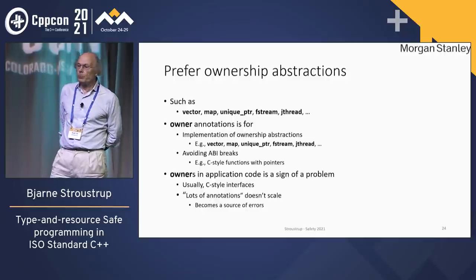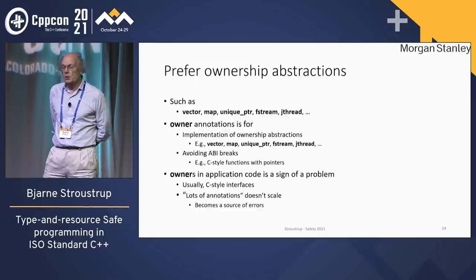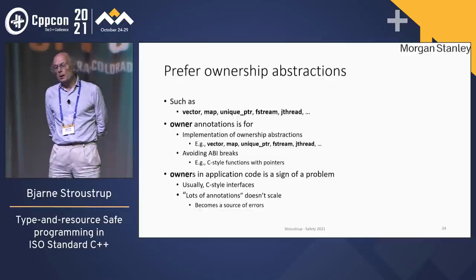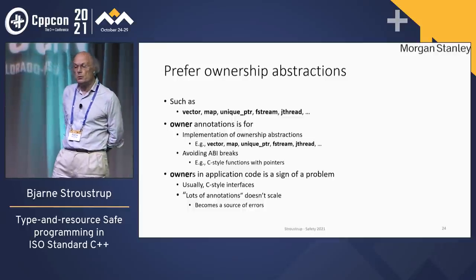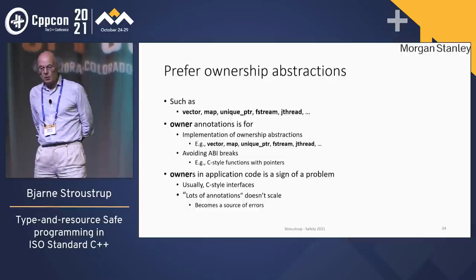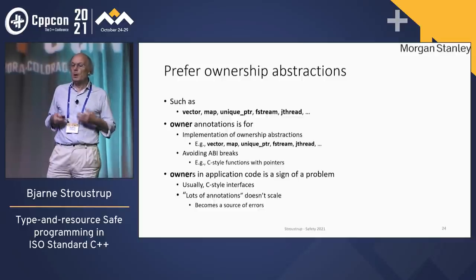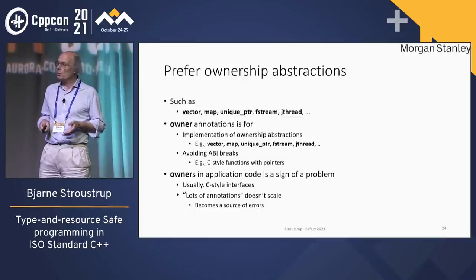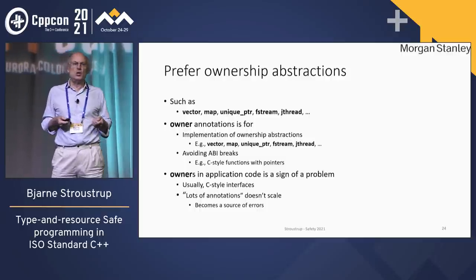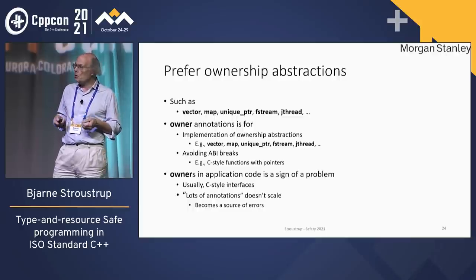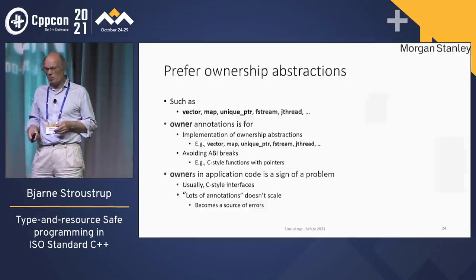A strong recommendation is prefer ownership abstractions that actually reflect something in the domain instead of being a low-level annotation. Vectors own their elements. Maps, those use unique pointers. File streams own file handles and buffers. Threads own thread handles and other stuff. The owner annotation is for implementation of ownership and to avoid ABI breaks. Sometimes we have to call code that doesn't obey our rules, so we can't rewrite them — we can't change code that takes a pointer and an integer to taking a span, which would be the good and proper way to do it.